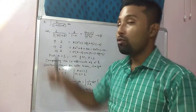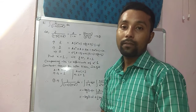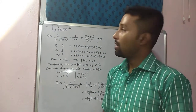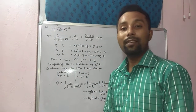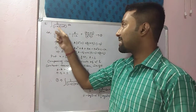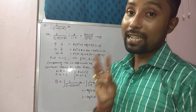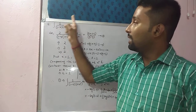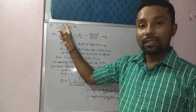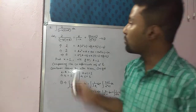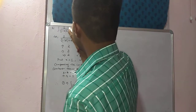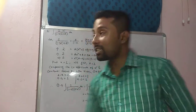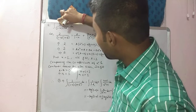Why? Because in the numerator there is no variable, whereas in the denominator the highest power of the unknown variable is 3. If I expand it, x into x square will be x cube, meaning the highest power is 3. So the degree of the numerator is less than the degree of the denominator. In the numerator there is no variable, so we can consider it as x power 0. So x power 0 is below x power 3, meaning we can say that this is proper.